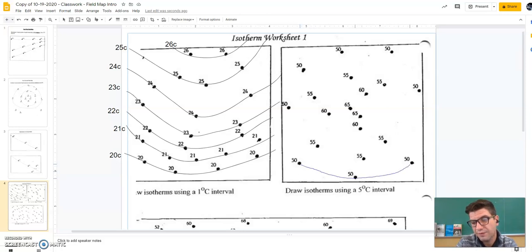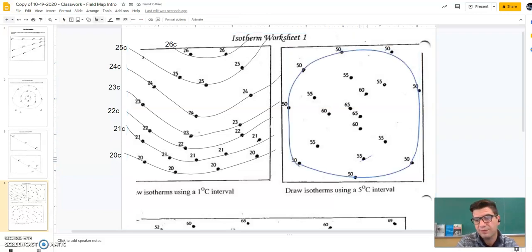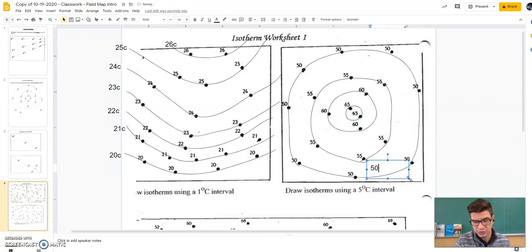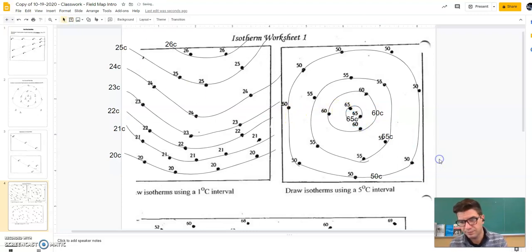So, I'm going to connect my 50s. 50, 50, 50, 50, 50, 50, 50. I'm going to do the same thing with the 55s. I'm going to do the same thing with the 60s. And then lastly, with the 65s in the middle, considering I have only two, I'm going to have to assume it follows that same circular pattern. I can continue like that. So, I'm going to have to label each. 50C, 55C, 60C, and lastly, 65C.